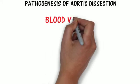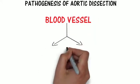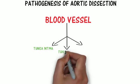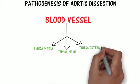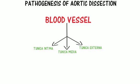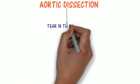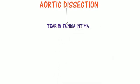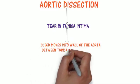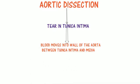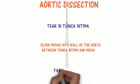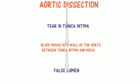As we all know, blood vessels consist of three different layers: the tunica intima, the tunica media, and the tunica externa, from inside to outside. In aortic dissection, a tear is formed in the tunica intima of the aorta, and high blood pressure forces blood through this tear into the wall of the aorta, flowing between the tunica intima and the tunica media, thus creating a false lumen. This is called a false lumen because the true lumen is within the blood vessel itself.